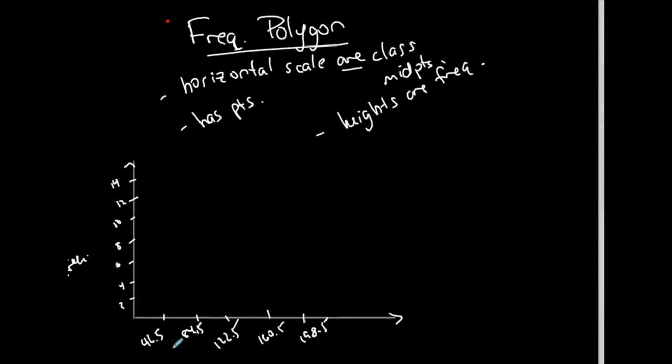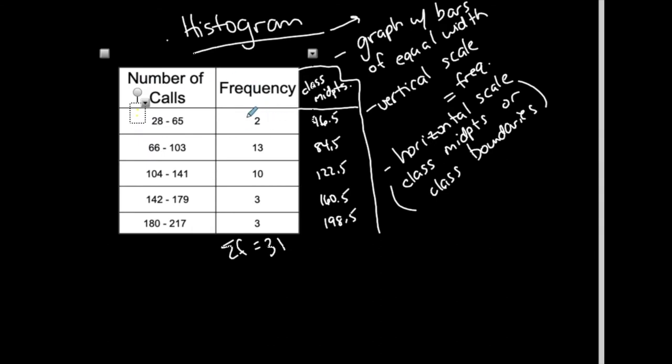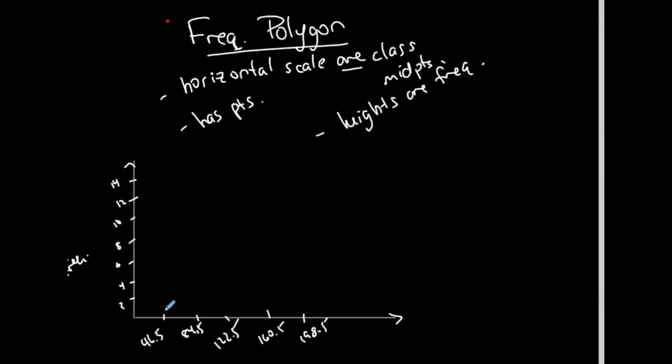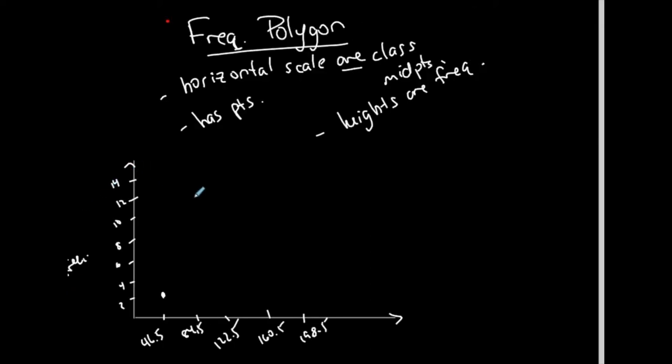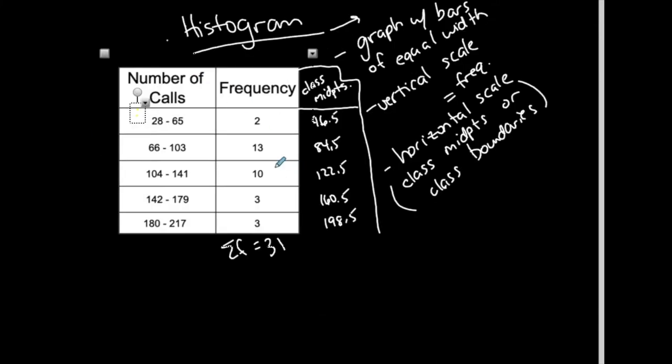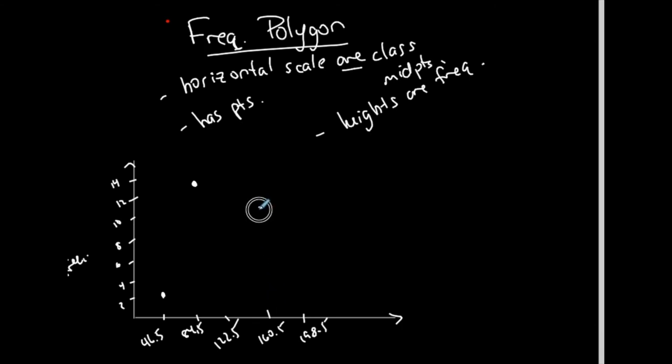So 46.5 is the representative of the first class because I don't technically know what these values are. The class midpoint is representing this class. There are two values from that class, so I put a dot on my frequency polygon at the intersection of 46.5 and 2. The next one, 84.5 is the representative of the second class, which has a frequency of 13. So I put a dot at the intersection of 84.5 and 13. The next one is at 10 and then 3 and then 3.